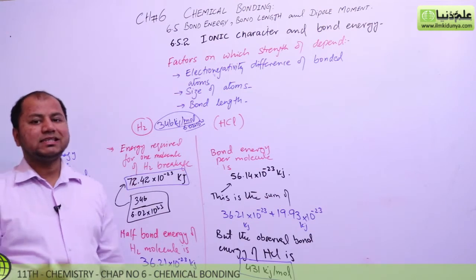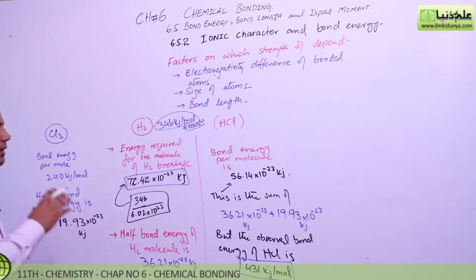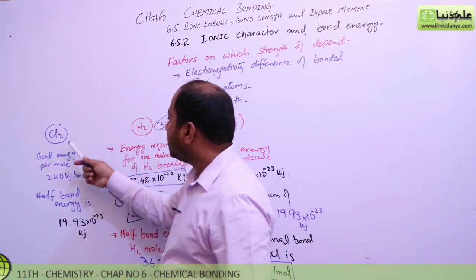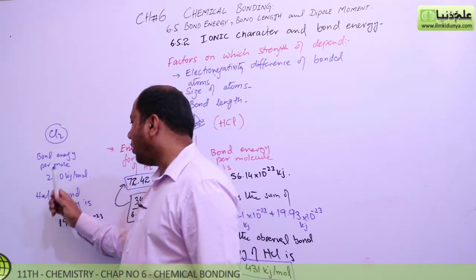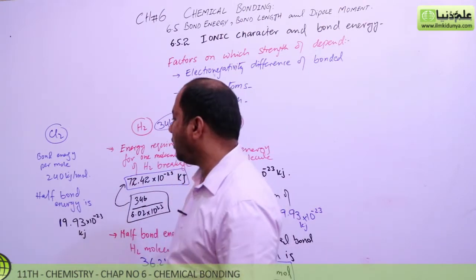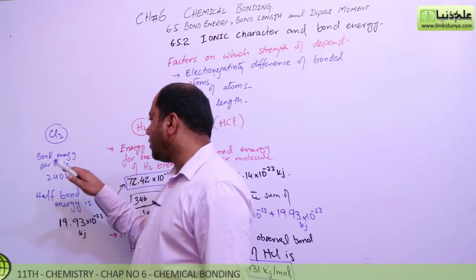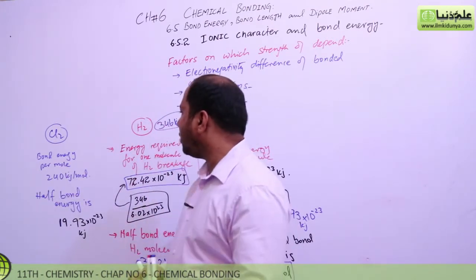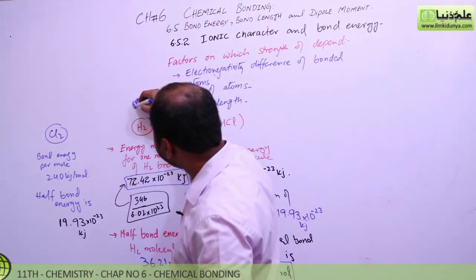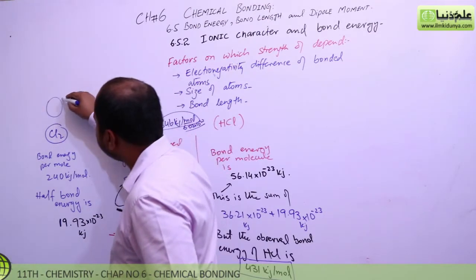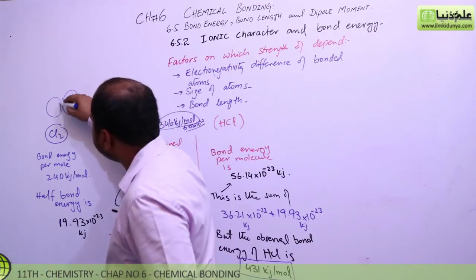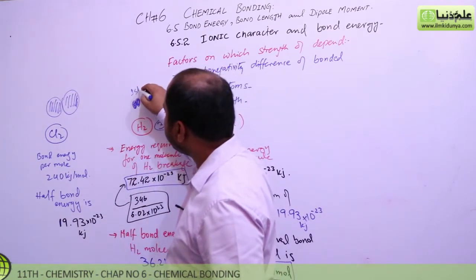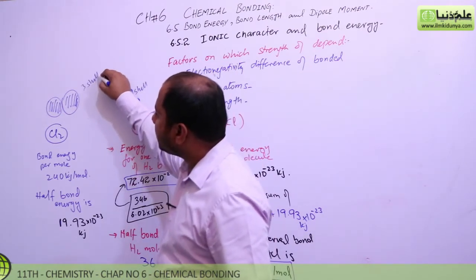If we look at the chlorine molecule, which is a bigger molecule compared to hydrogen, the bond energy per mole of chlorine is 240 kJ per mole. Hydrogen is a small molecule. Chlorine, being element number 17 in the periodic table, has 17 electrons and has three electron shells.